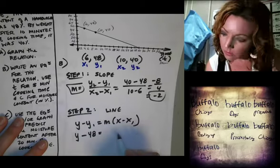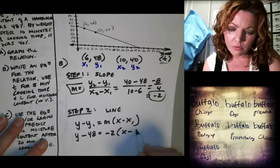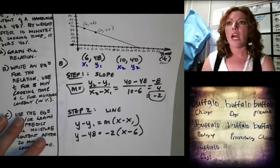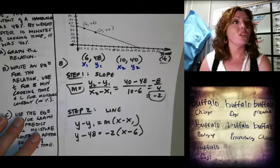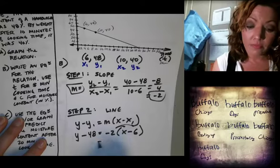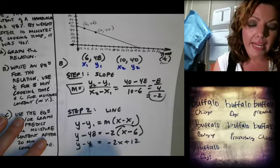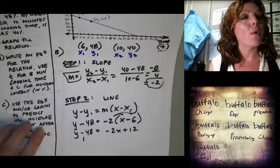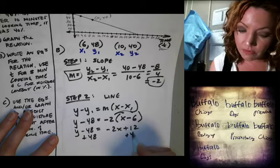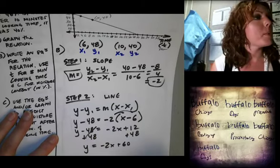Step two is the line equation: y minus y₁ equals m times (x minus x₁). Plugging in our values and simplifying — distributing and then we add 48 to get y by itself — we get y equals negative 2x plus 60.